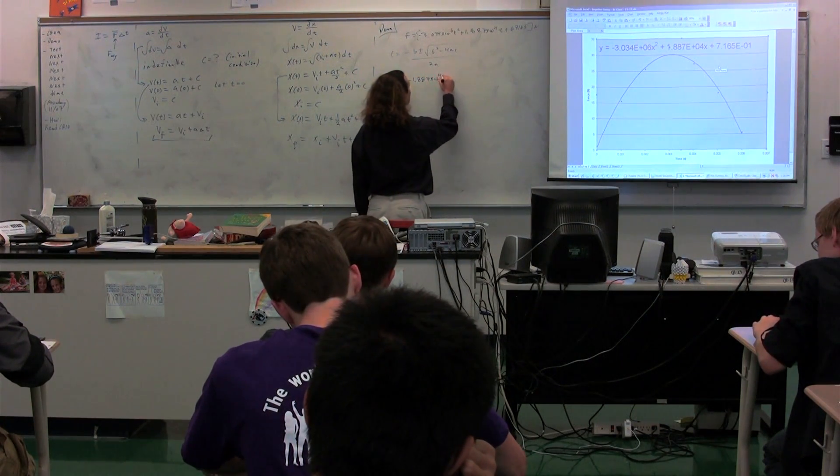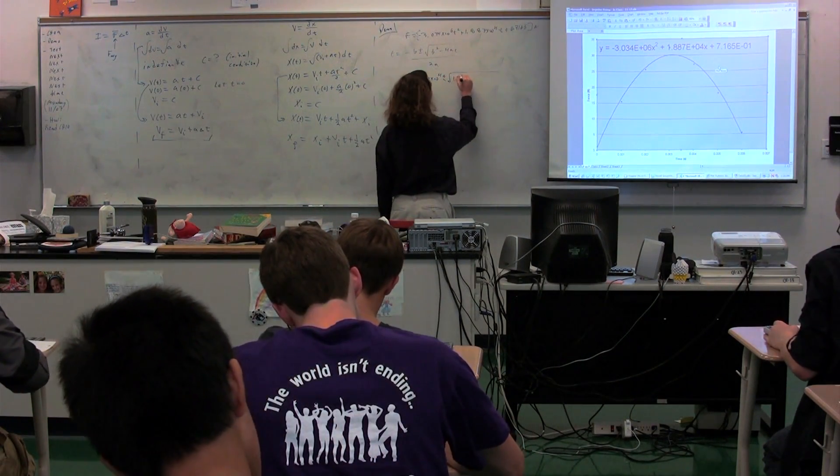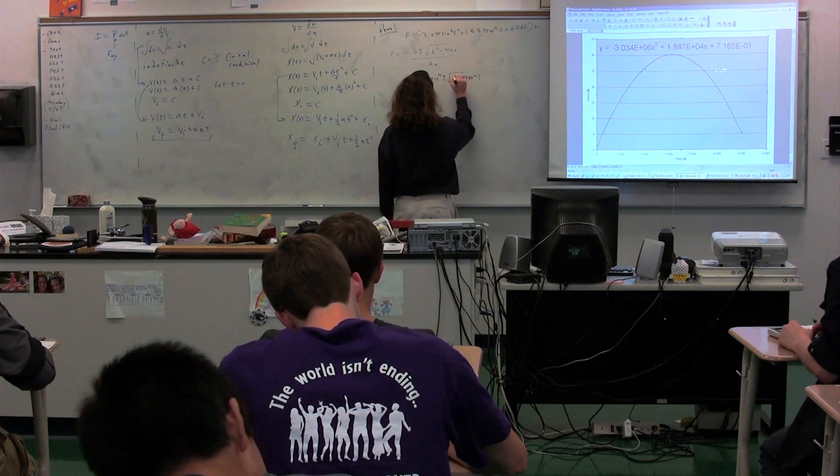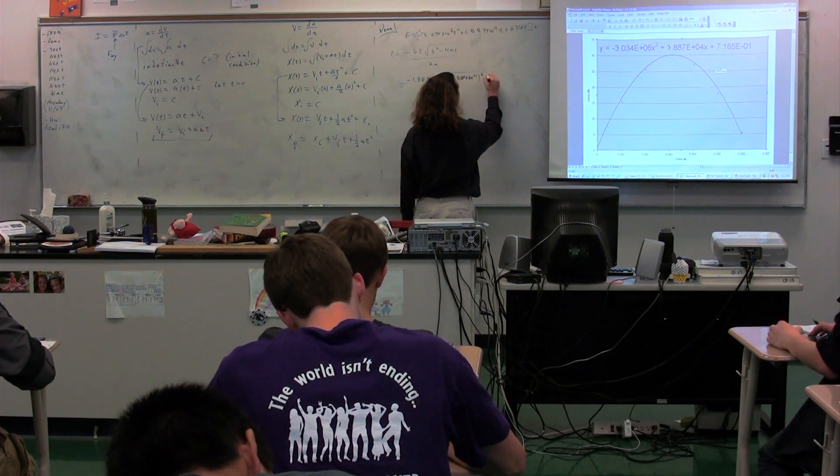Plus or minus the square root of B, plus or minus the square root of we have 1.887 times 10 to the 4th squared minus 4 times A.